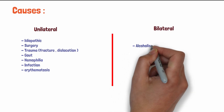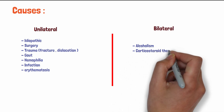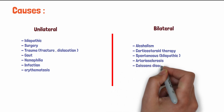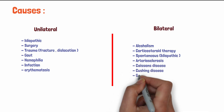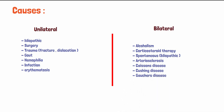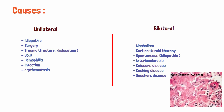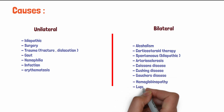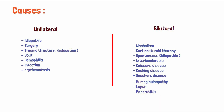Bilateral causes include alcoholism, corticosteroid therapy, spontaneous or idiopathic causes, arteriosclerosis, Caisson's disease (also called acute decompression syndrome, involving release of nitrogen gases), Cushing's syndrome, Gaucher's disease (a lysosomal storage disorder that is autosomal recessive, where there is cellular hypertrophy and bone marrow infiltration), hemoglobinopathies like sickle cell anemia, lupus, and pancreatitis.